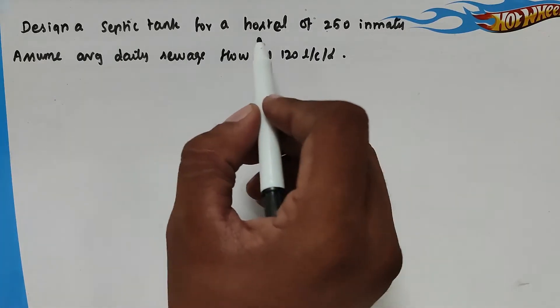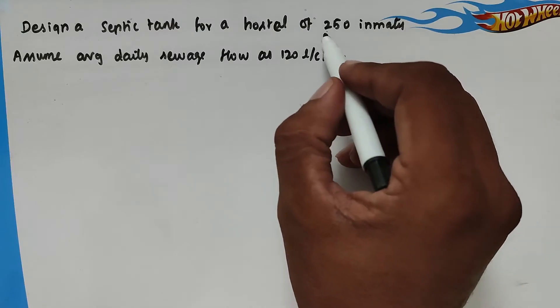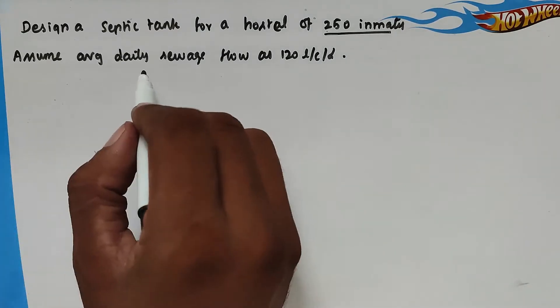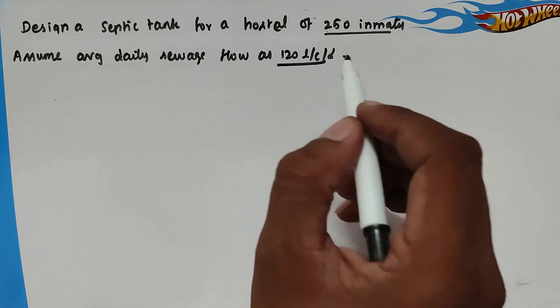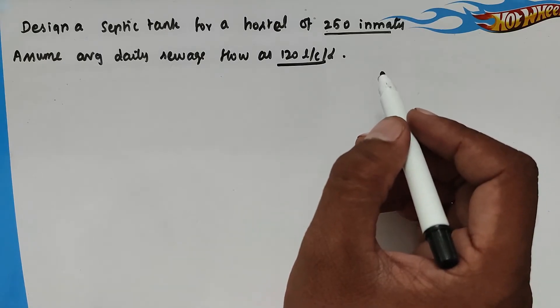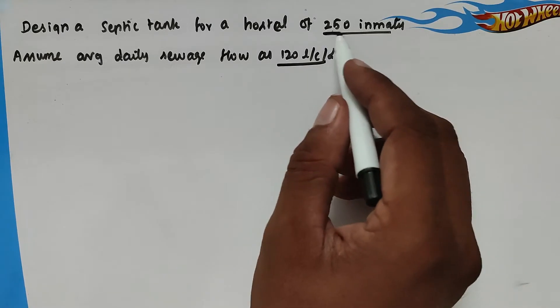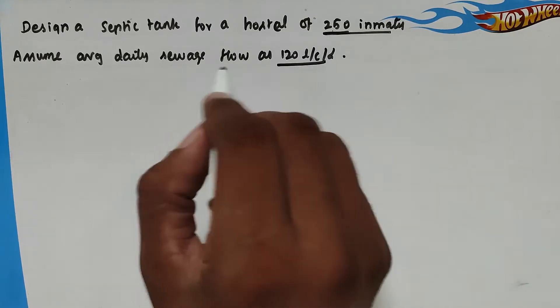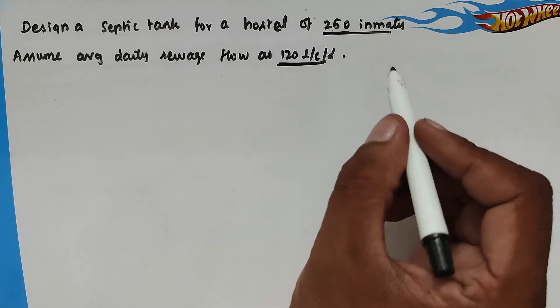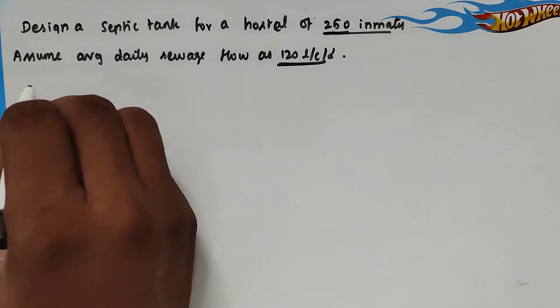The problem is: design a septic tank for a hostel of 250 inmates. Assume the average daily sewage flow is 120 liter per capita per day. So we have to design the septic tank for 250 persons and the daily sewage supply is 120 liter per capita per day. So now the solution.